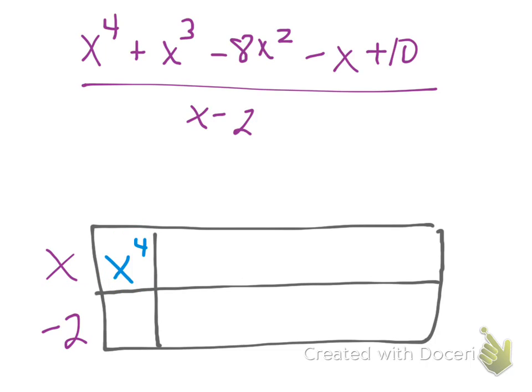Or I could think of it as x to the 4th divided by this x. Either way, I get the answer of x to the 3rd. Since it's a generic rectangle, I now can figure out this box right here by multiplying x cubed times negative 2, which gives me a negative 2x cubed.